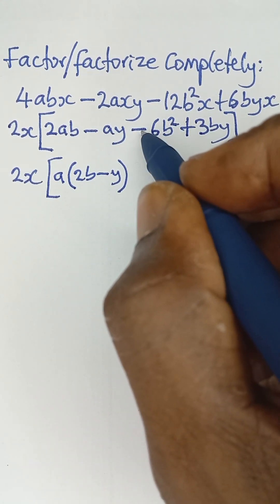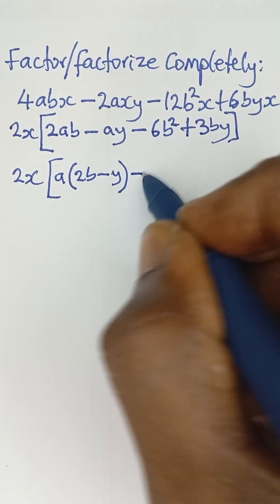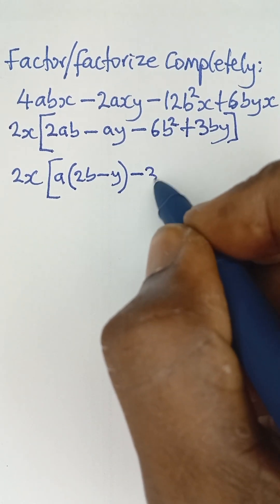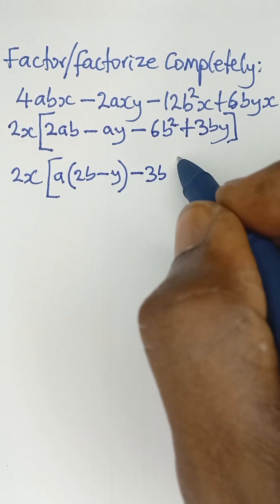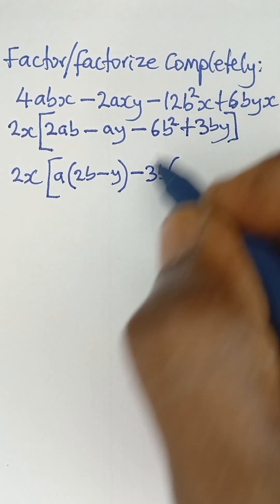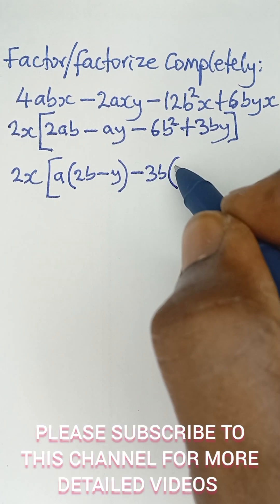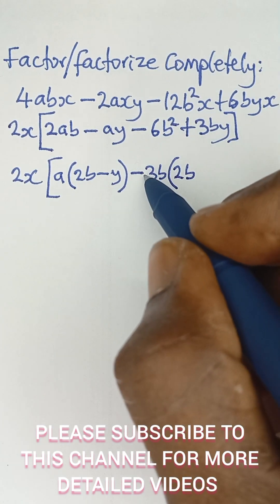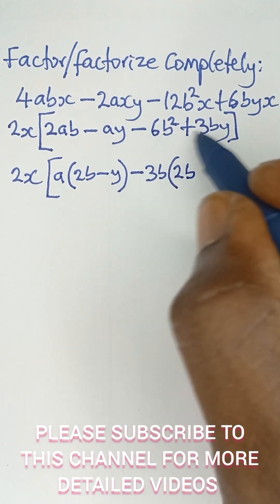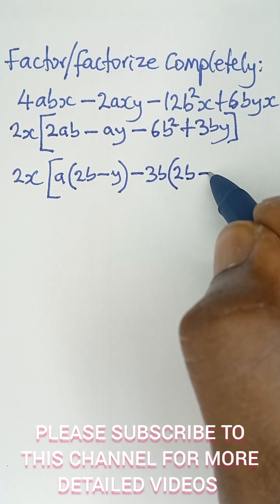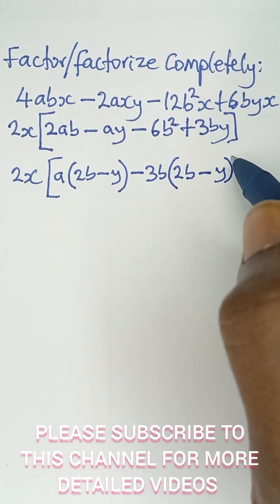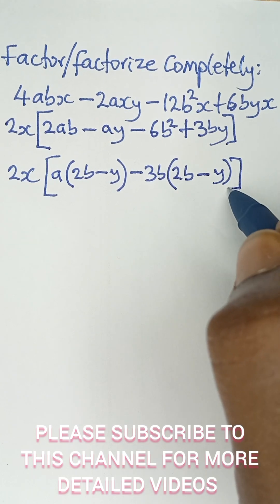And then this sign, whatever sign that is there is what we are going to take. And then what is common to these two, I have 3b common. 3b, and then divided by this, I'll be left with 2b. And then because there's a negative sign here, this divided by this, I'll be left with negative y. And then I can close the bracket.